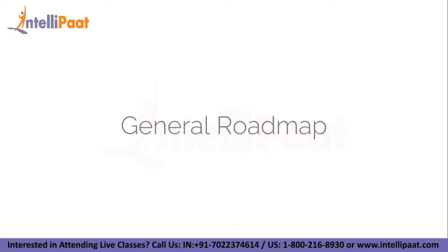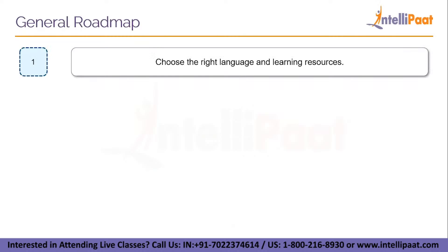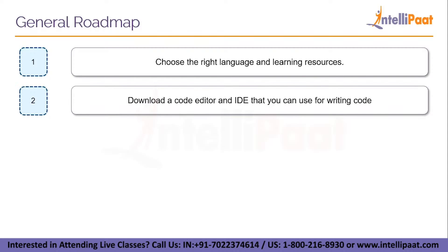Now let's move on to the Roadmap. The first step is to choose the right language and the learning resources. After taking a look at the languages just explained, choose one which is right for you and then pick an online platform that has the best resources for that particular language. Download a code editor and IDE that you can use for writing code. IDE stands for Integrated Development Environment — it is a software used to practice your coding and get your code running in a simple way.